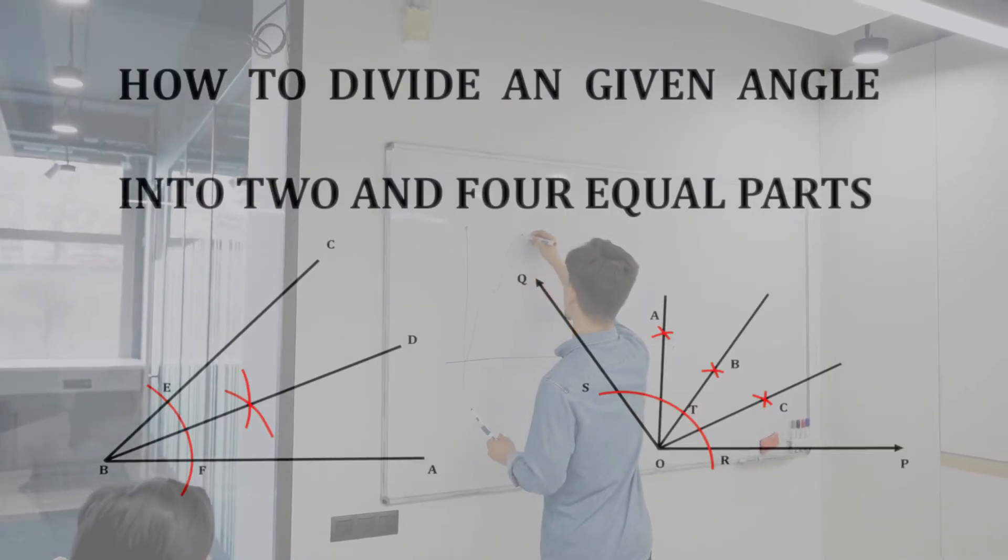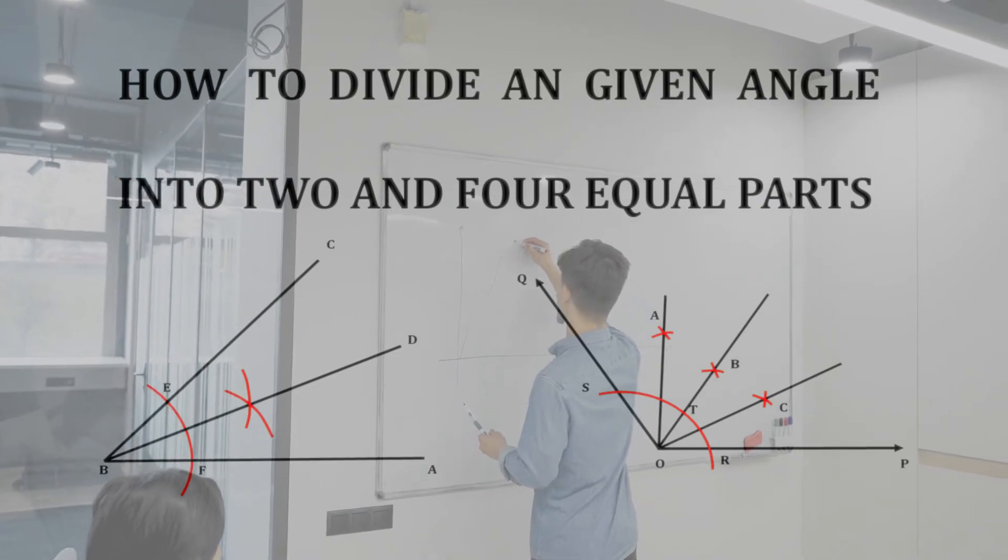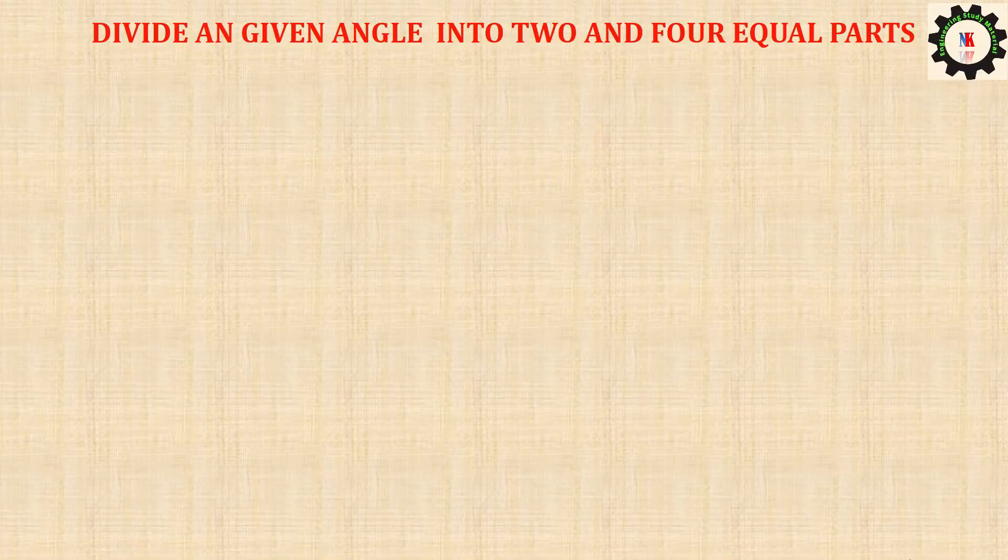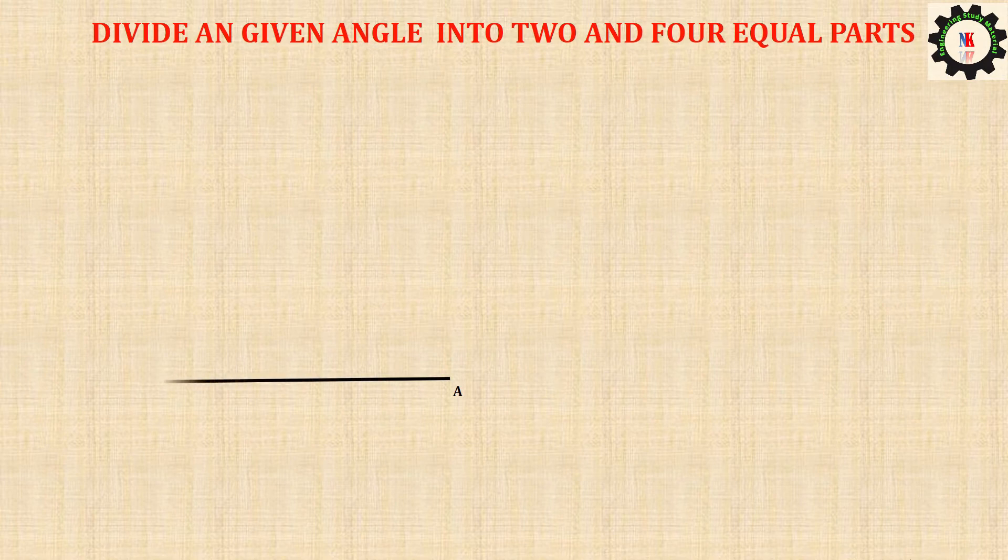How to divide a given angle into two and four equal parts. Construct an angle ABC, say for example 60 degrees.